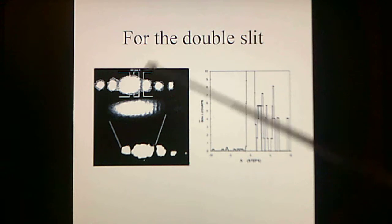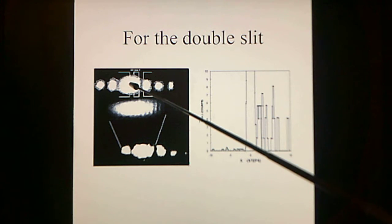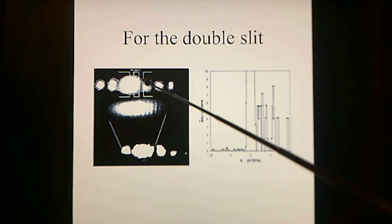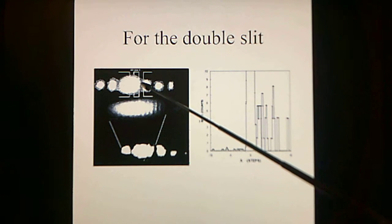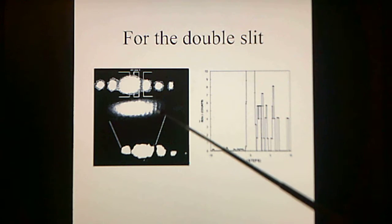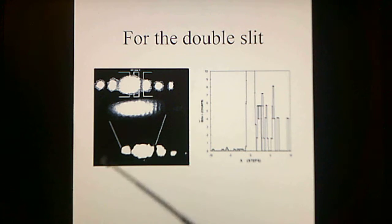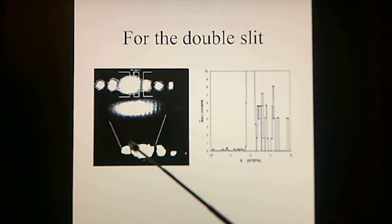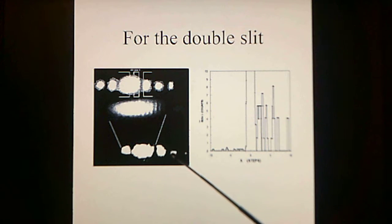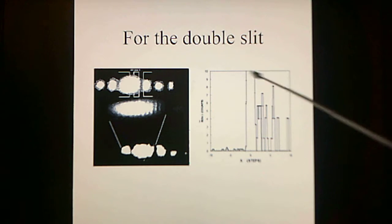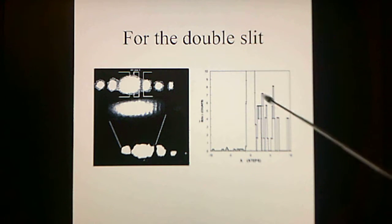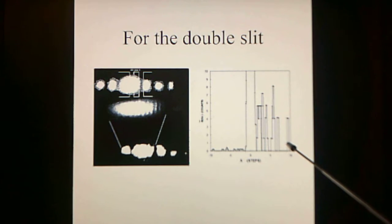For the double slit, one slit is positioned over the central peak maxima and the other slit over the first minima. When the camera exposure is changed, we can see that the central peak has interference fringes. Changing the exposure back to detect the secondary peaks shows that they are there also. The simulation shows the central peak, interference fringes, and secondary peaks in agreement.